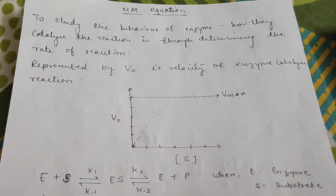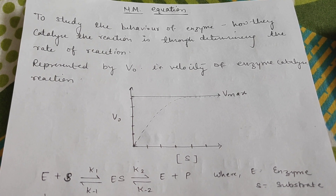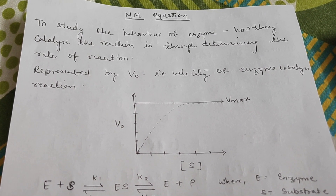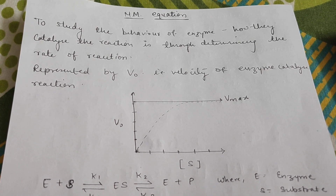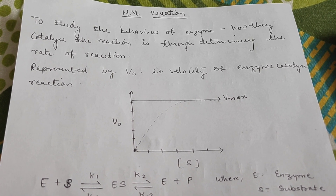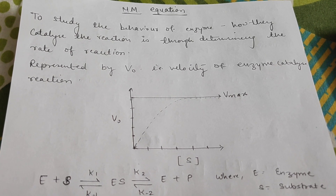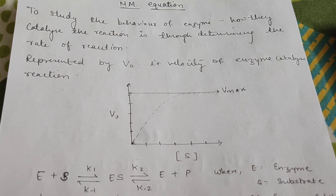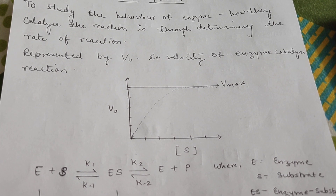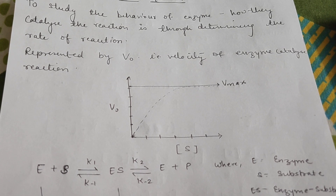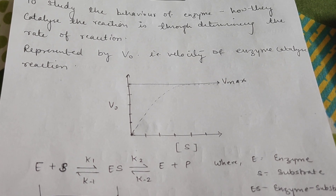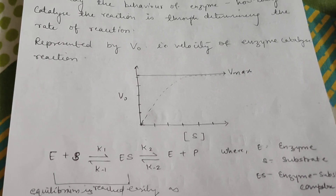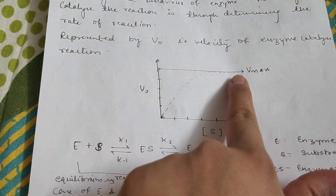Hi students, I am Shrita Paranspayee and today I am taking a lecture on the Michaelis-Menten equation. Mainly to study the behavior of the enzyme and how it catalyzes the reaction — we have to determine the rate of the reaction, that means the velocity at which the enzyme works and converts a substrate into product. We can draw a graph with substrate concentration on the x-axis and velocity on the y-axis, which gives a hyperbolic curve.